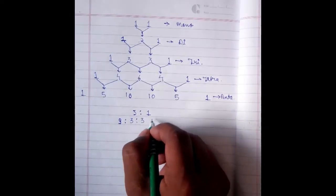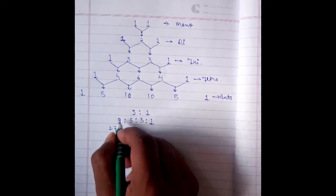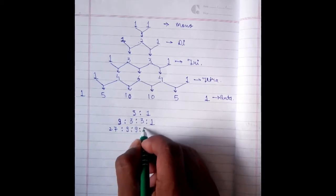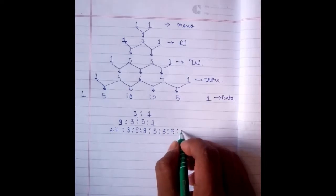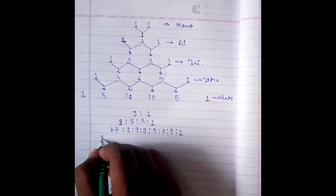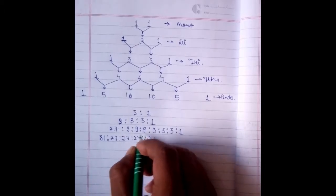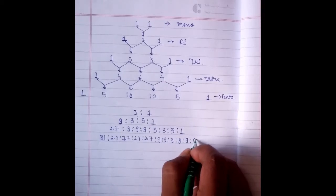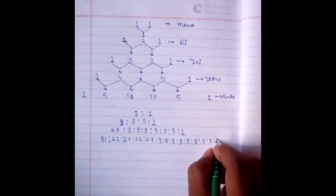For the dihybrid cross, using the row 1, 2, 1: we multiply 9 one time, then 3 two times (giving 3:3), then 1 one time — so the ratio is 9:3:3:1. For the trihybrid cross, using row 1, 3, 3, 1: we multiply 27 one time, 9 three times, 3 three times, and 1 one time — giving the ratio 27:9:9:9:3:3:3:1.